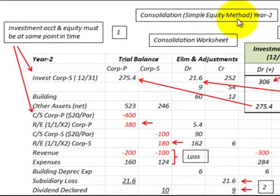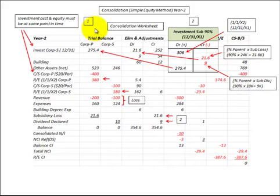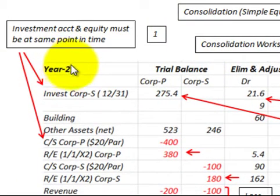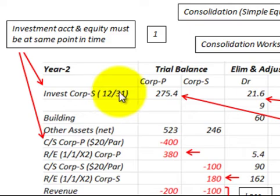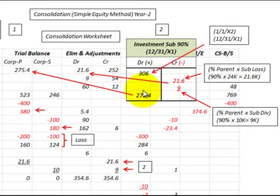Starting with the consolidation using the simple equity method, we're aligning the investment account with the equity account so they are at the same point in time, or have the same date. Looking at our consolidation worksheet for year two, we have to bring the investment account in the subsidiary — sitting at end of year X2, the 12/31 date — in line with the equity account sitting at 1/1, or the beginning of year two. At the end of the year we have a $275,400 balance in the investment in the sub.